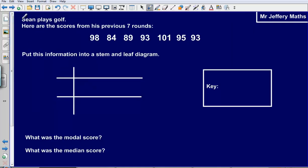Next up, if you've got that question incorrect, then pause the video now and attempt this question. If you got it right, then move on to the next video. Sean plays golf. Here are the scores from his previous seven rounds. 98, 84, 89, 93, 101, 95 and 93.